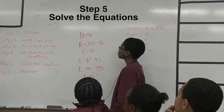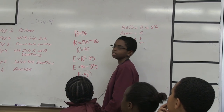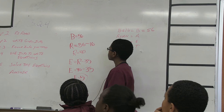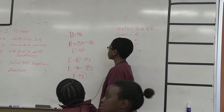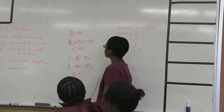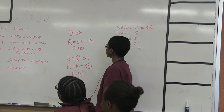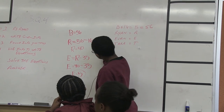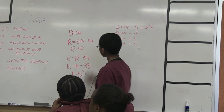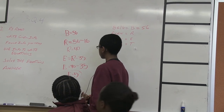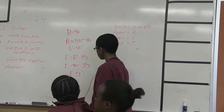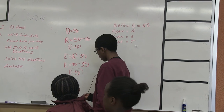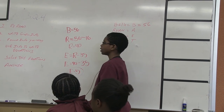Belle is 56 years old as stated in the problem. We subtracted 16 from 56 because Ryan is 16 years younger than Belle, so he is 40. Evan is 35 years younger than Ryan, so we did 40 minus 35 to get Evan's age of 5 years old. It's easy — just follow the steps.